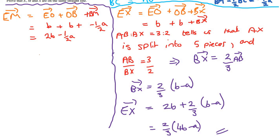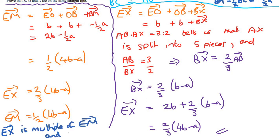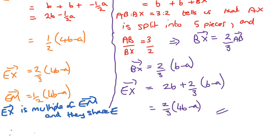Going back to E to M, we can factorise to get ½(4b − a). So we have EX equals two-thirds(4b − a) and EM equals a half(4b − a). This shows EX is a multiple of EM, and they share the common point E. Therefore E, M and X are on the same straight line, and we're done.